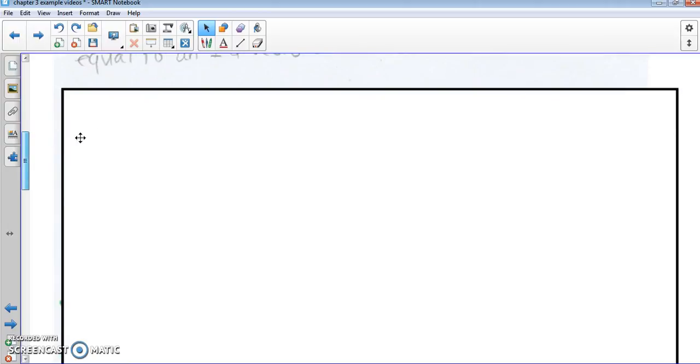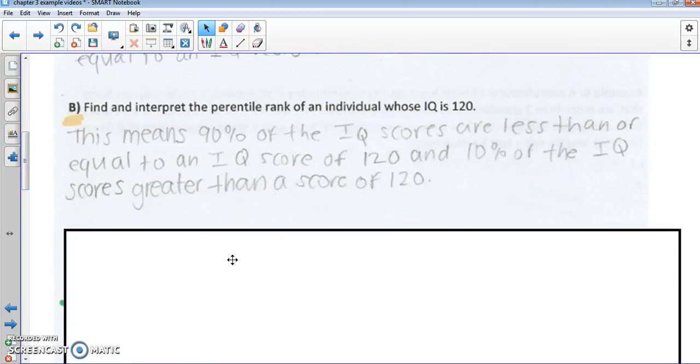So looking at part B here, this means that 90% of the IQ scores are less than or equal to an IQ score of 100, so that 90% is, give or take there. And on the other hand, we have that 10% of the IQ scores are greater than a score of 120 there.